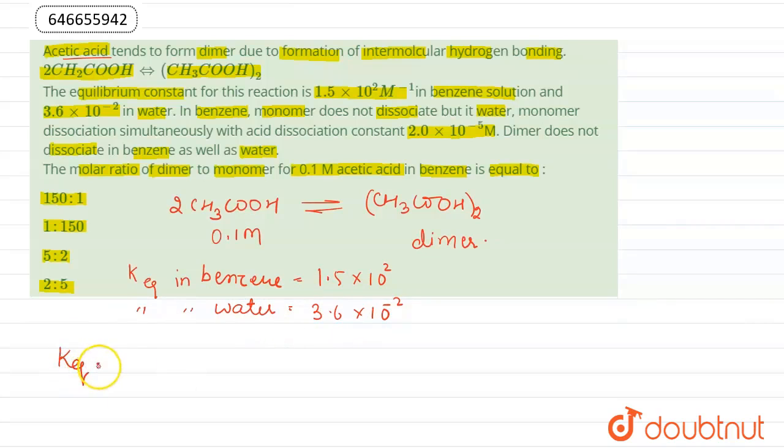If we write equilibrium constant for this reaction, then it is equal to [(CH3COOH)2] divided by [CH3COOH]². Here we can calculate concentration of CH3COOH after dimerization. In benzene we have the value of equilibrium constant equal to 150.